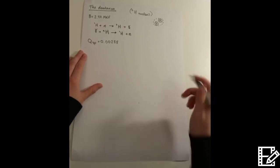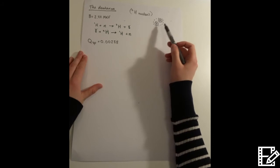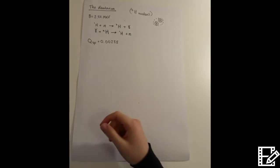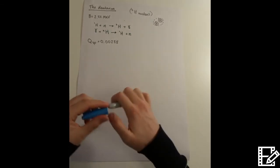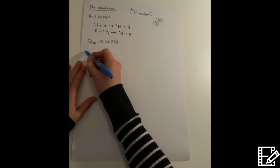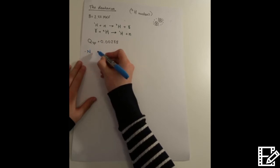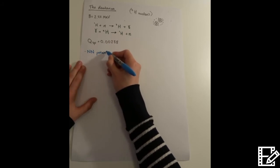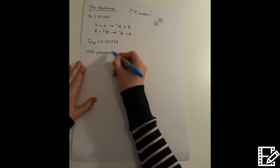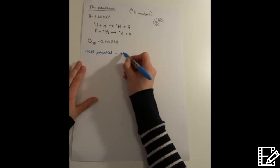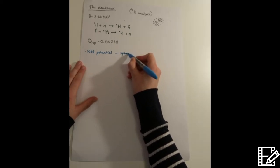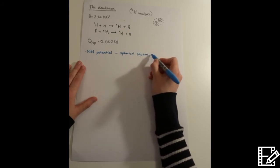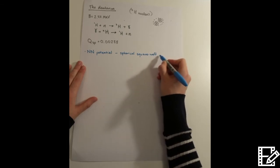Now, as I said, it's an ideal system for investigating the nucleon interaction. And what we do is start by estimating the interaction. So this is the nucleon potential. We estimate it as a spherical square well potential.